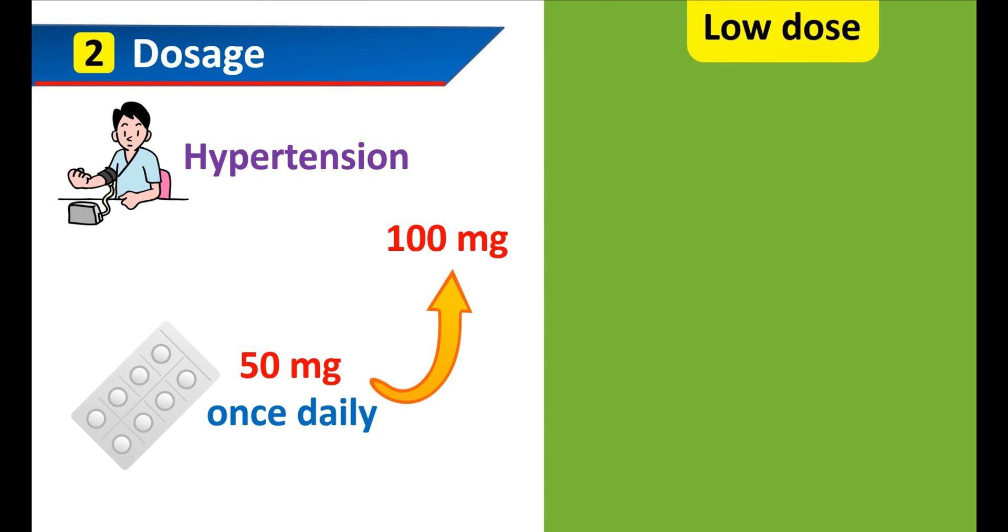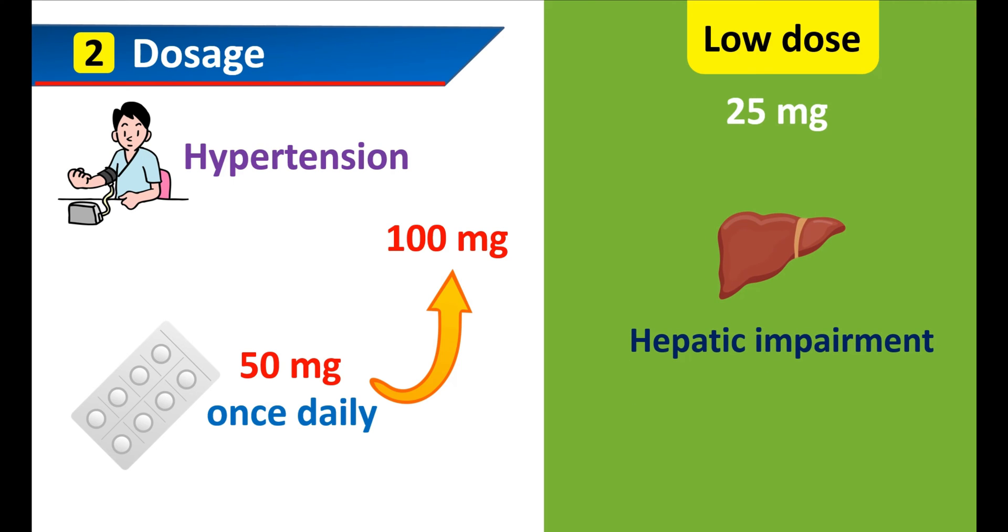However, it can be used at a low dose in a few conditions. It can be started at a low dose of 25 mg for people with hepatic impairment.